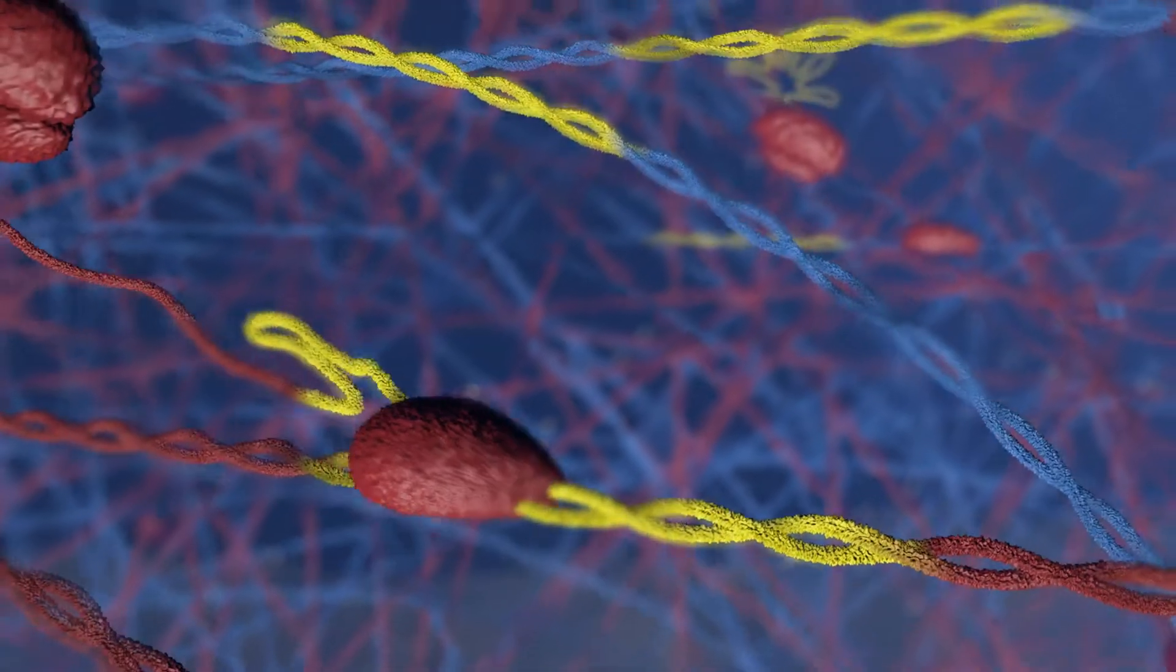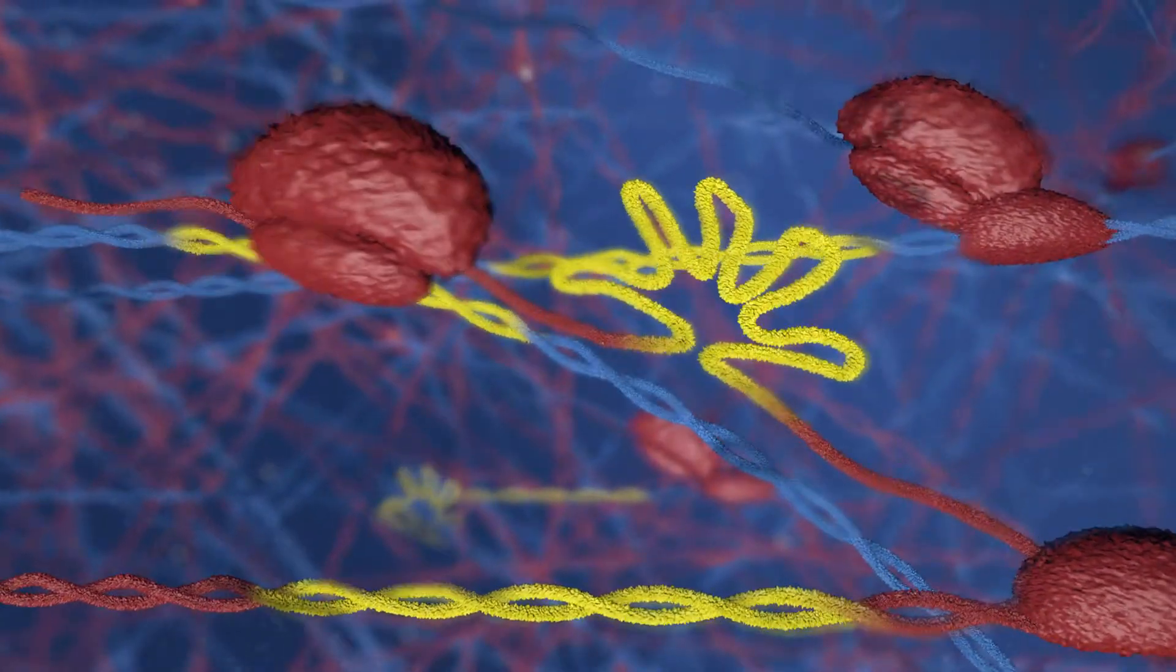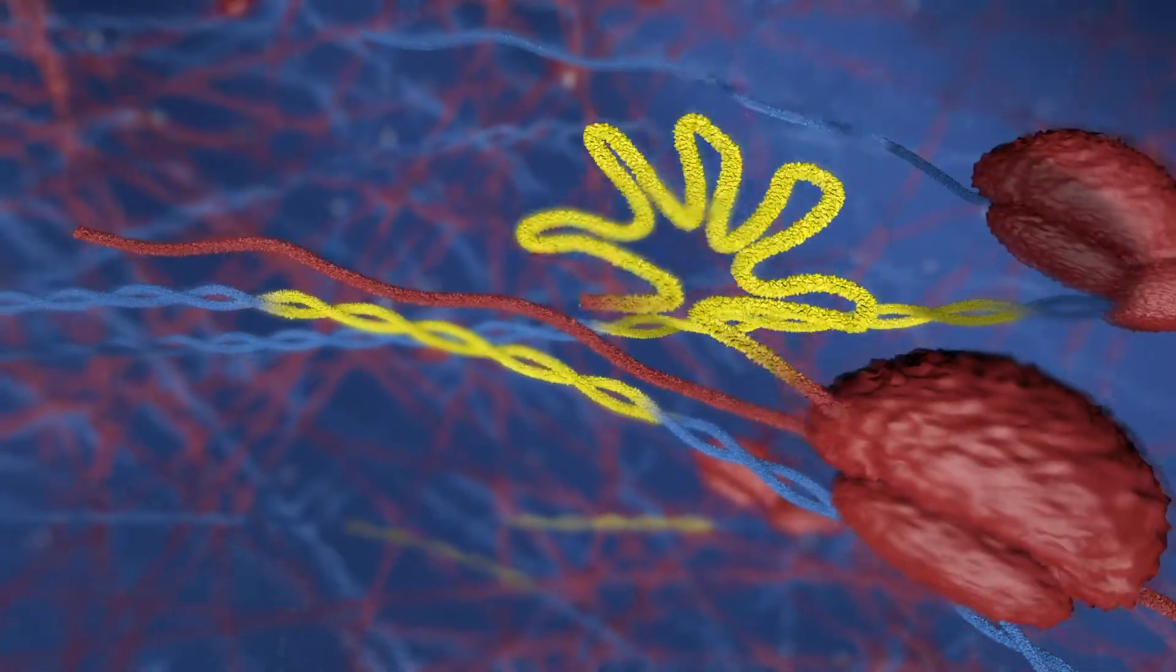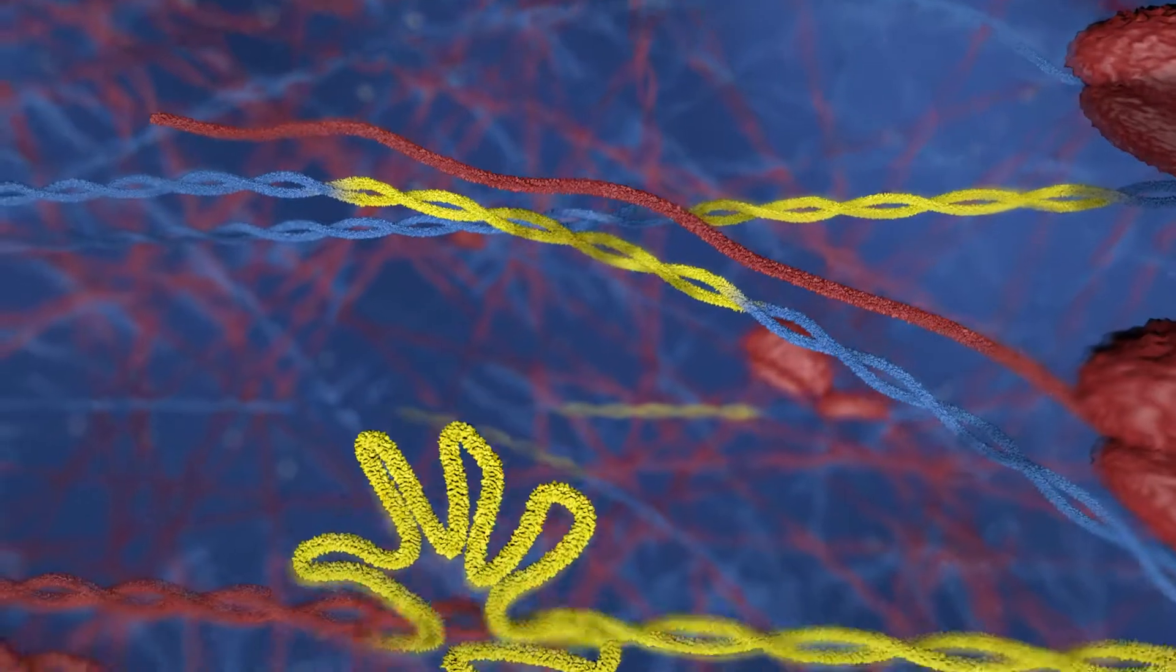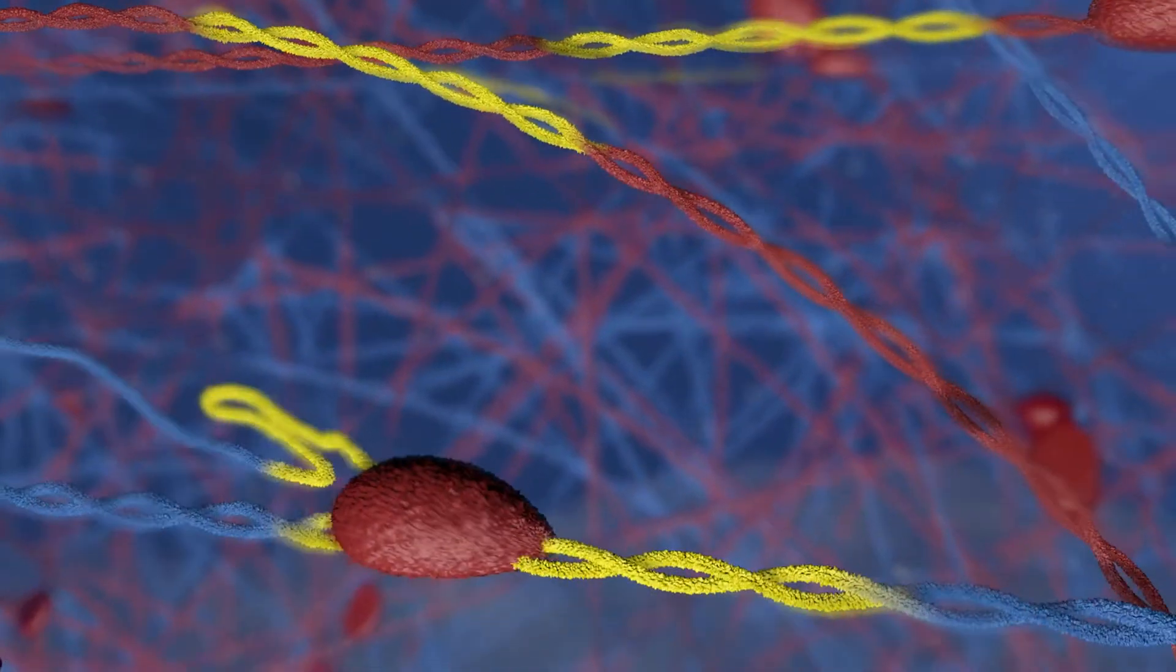Group 2 introns do not impair gene expression in prokaryotes because ribosomes are active on nascent transcripts to remove the newly inserted group 2 introns. However, group 2 introns are the evolutionary precursors of the spliceosomal introns found in eukaryotes.